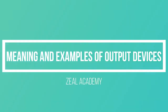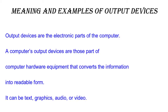Meaning and Examples of Output Devices. Output devices are the electronic parts of the computer. A computer's output devices are those parts of computer hardware equipment that convert information into readable form. It can be text, graphics, audio, or video.